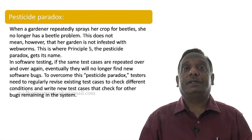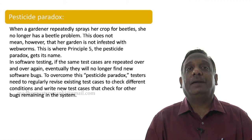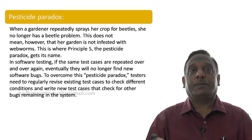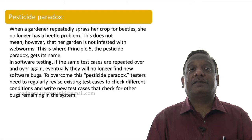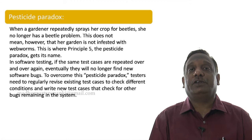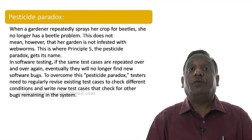Let's first understand the words 'pesticide paradox.' We all know what a pesticide is — we use pesticides on crops to kill insects so that crops are protected. A paradox occurs when you apply a pesticide expecting to kill insects, but instead of being killed, the insects actually multiply. The opposite of what you intended is happening.